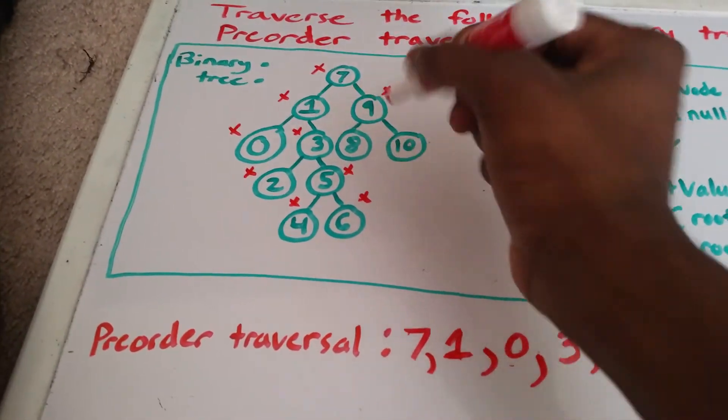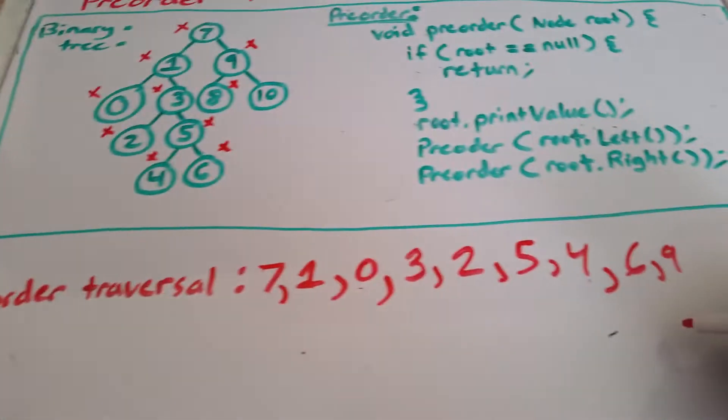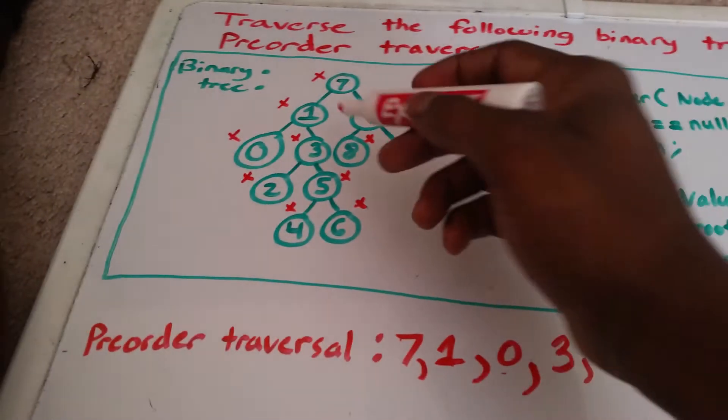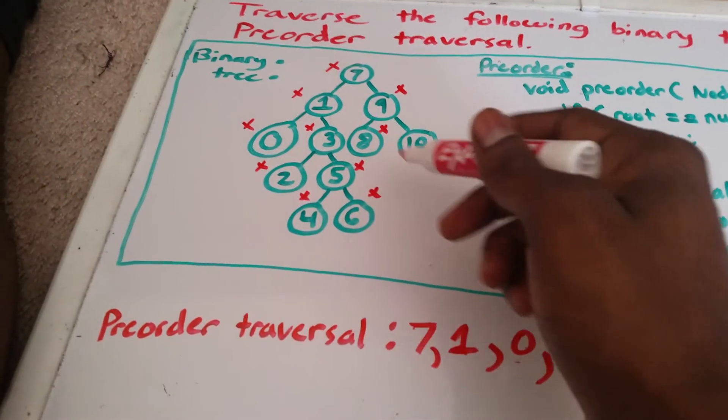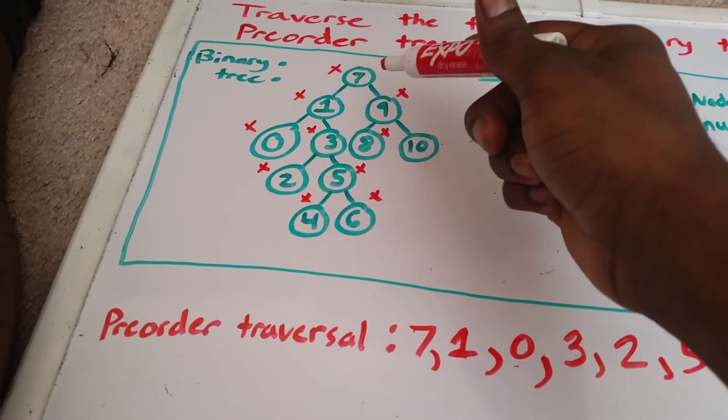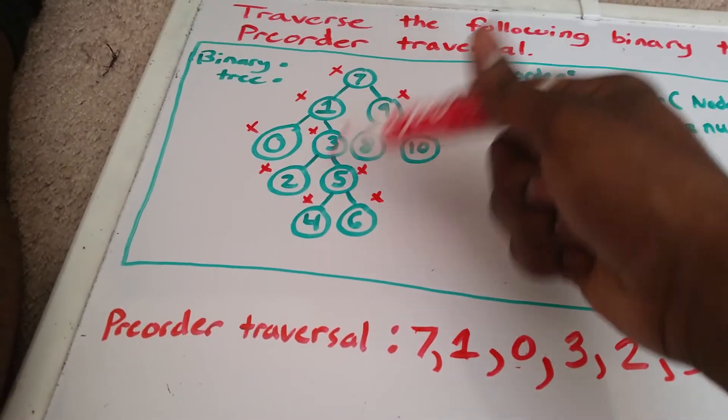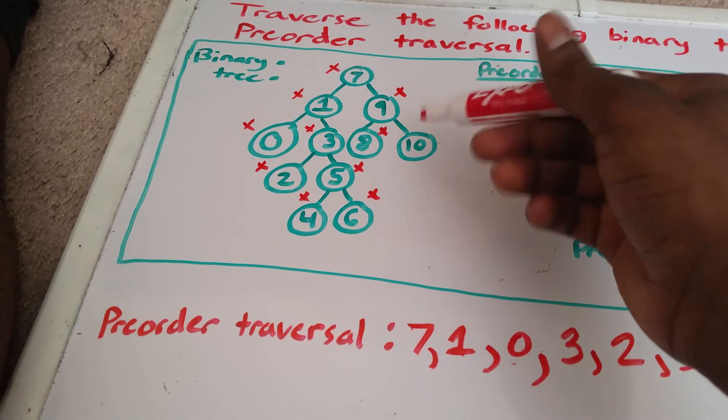To the left of 9 is 8. So go ahead and print 8. And we're done with 8. Because it has no children, we go back to 9. We're done with 9 on the left-hand side of 9. So we need to go to the right of 9, which is 10.